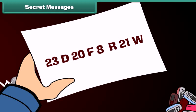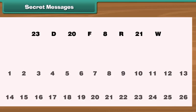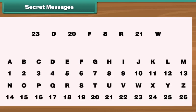Let us decode a secret message. Here is the message: 23 D 20 F 8 R 21 W. The numbers represent the letters of the English alphabet of those positions. 23rd letter of the English alphabet is W. 20th letter is T. 8th letter is H.